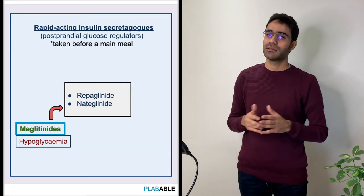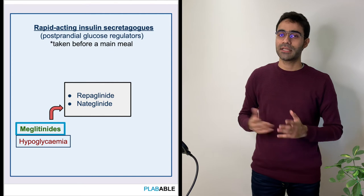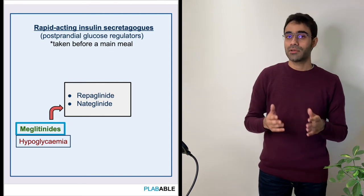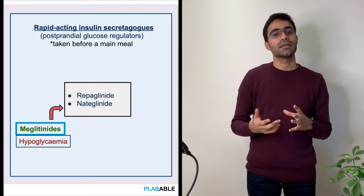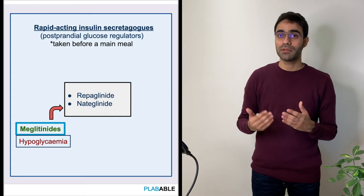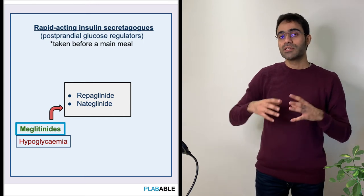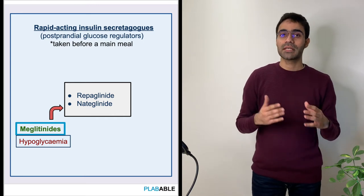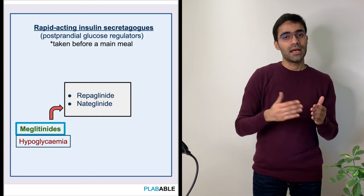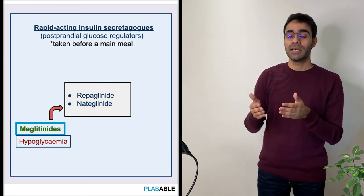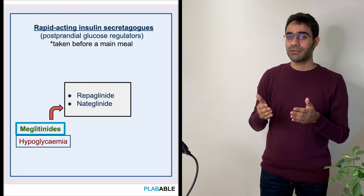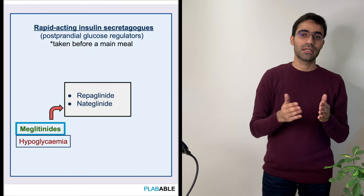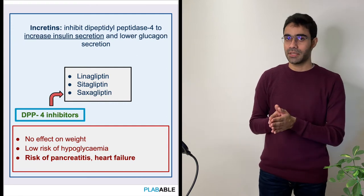Moving on to the next class of drugs, which is meglitinides — repaglinide or nateglinide. These drugs are also insulin secretagogues, meaning they work by increasing the secretion of insulin. Any drug which works by increasing insulin secretion has a risk of hypoglycemia, and hence there is an increased risk of hypoglycemia associated with these drugs as well.